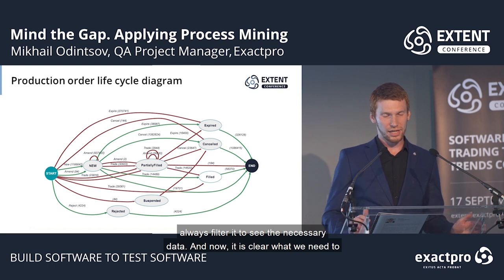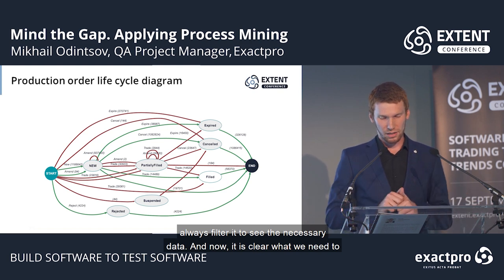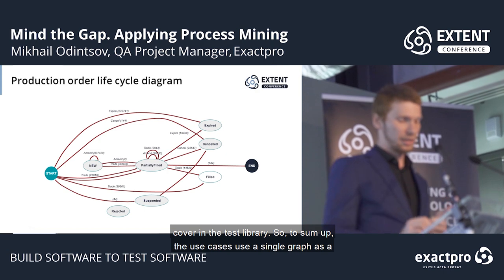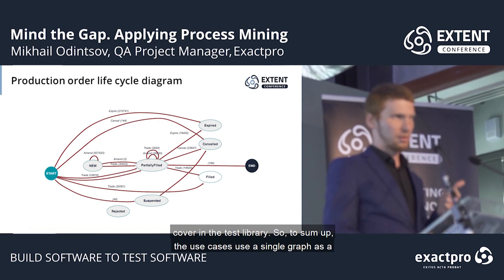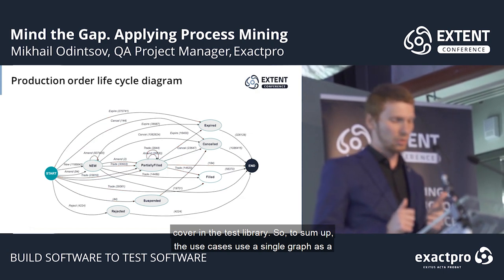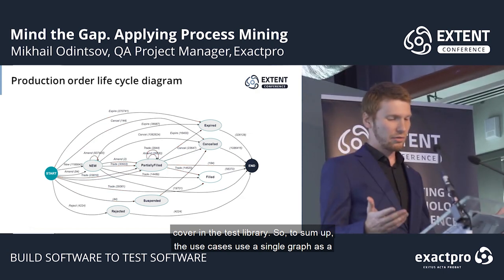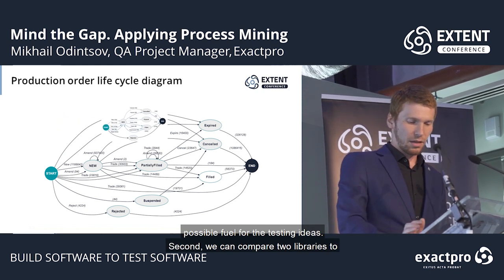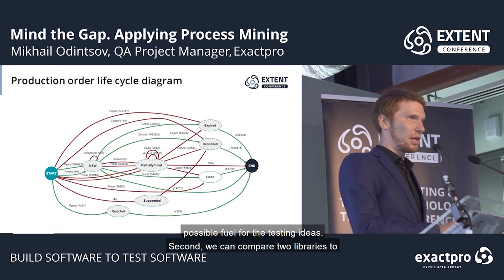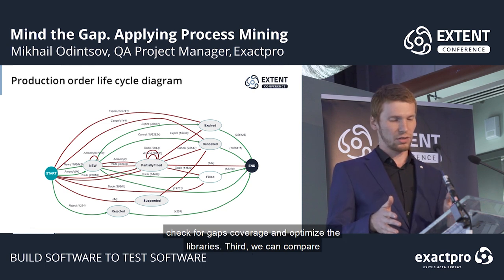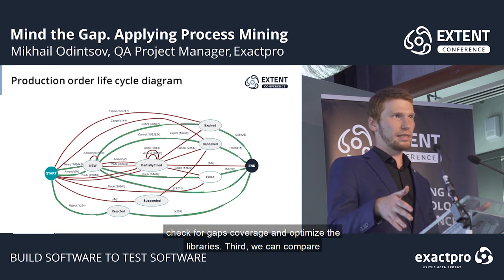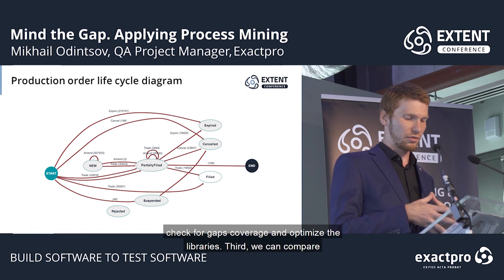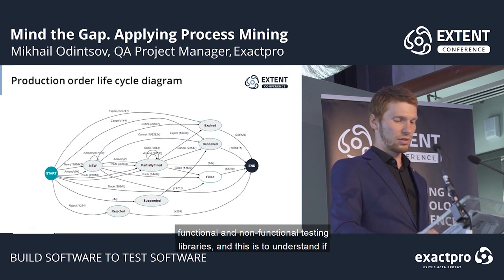To sum up, the use cases are: first, use a single graph as a source of ideas for testing. Second, we can compare two libraries to check for gaps in coverage and optimize libraries. Third, we can compare functional and non-functional testing libraries to understand if we have the same transitions covered for both.